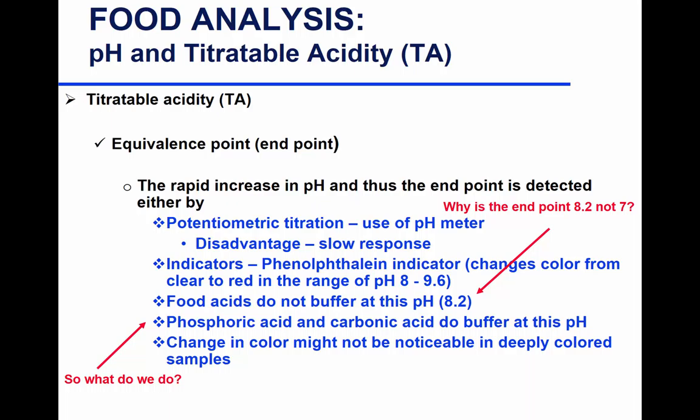Titratable acidity: you are titrating with a base to determine the equivalence point. At equivalence, there will be a rapid increase in pH due to depletion of AH. The depletion of AH brings it close to zero, resulting in that rapid pH increase.